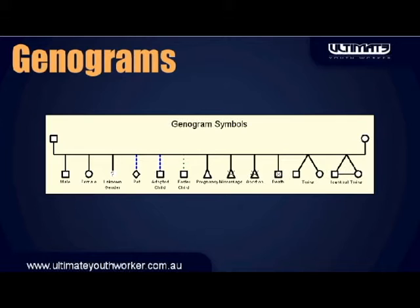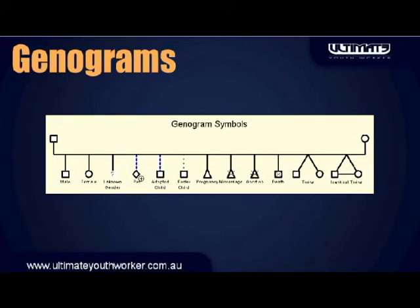Squares are males, circles are females, triangles are pregnancy-related, and as you can see here we have twins — so the lines also have something to do with it. One thing I need to point out is it also covers pets — it's not just people, but all of those things that are part of a person's social relationships.